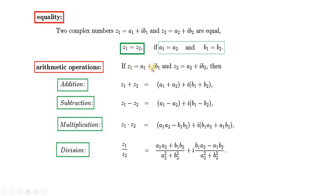If z₁ = a₁ + ib₁ and z₂ = a₂ + ib₂, then for addition of complex numbers we add the real parts together and the imaginary parts together. For subtraction, we take the subtraction of real parts and subtraction of imaginary parts.